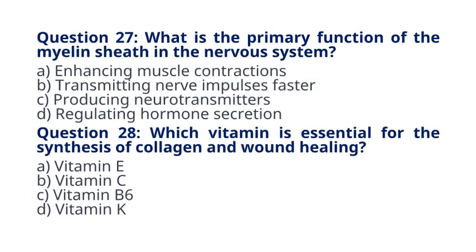Question 27. What is the primary function of the myelin sheath in the nervous system? A. Enhancing muscle contractions. B. Transmitting nerve impulses faster. C. Producing neurotransmitters. D. Regulating hormone secretion. The correct answer to question 27 is option B. Transmitting nerve impulses faster. Explanation: The myelin sheath is a fatty covering that insulates nerve fibers, allowing for faster transmission of nerve impulses.